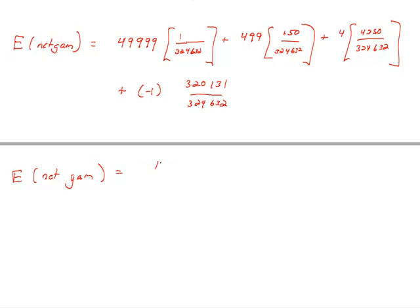Now, if you want it in a fraction form, it's negative 177882 over 324632. And that rounds to roughly, so to two places here, because we're dealing with money, is that I'm losing, on average, 55 cents per lottery ticket that I purchased.